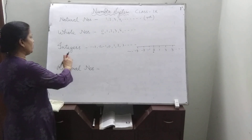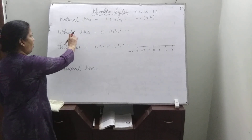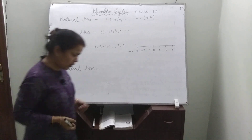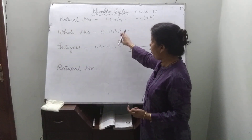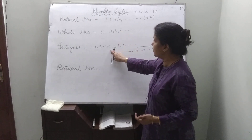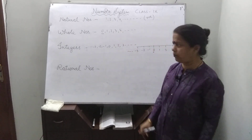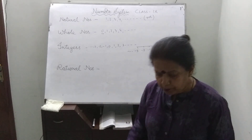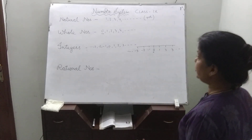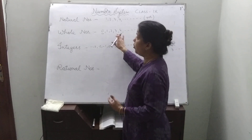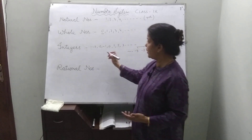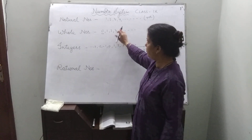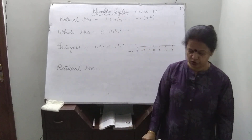Can you tell me whether all whole numbers are integers? Yes, all whole numbers come in integers. So it means all whole numbers are integers. But all integers are not whole numbers — because in integers, negative numbers are also there, but not in whole numbers or natural numbers.